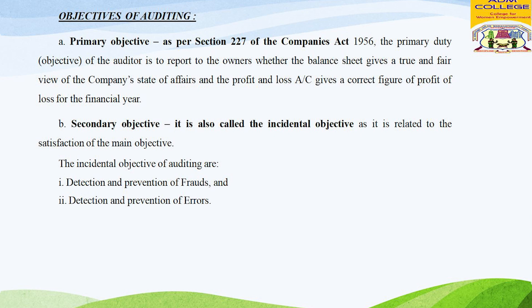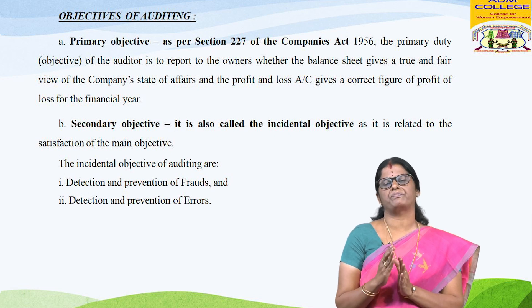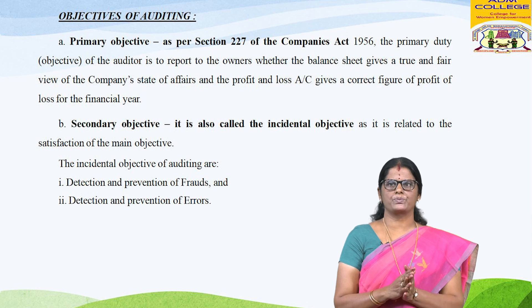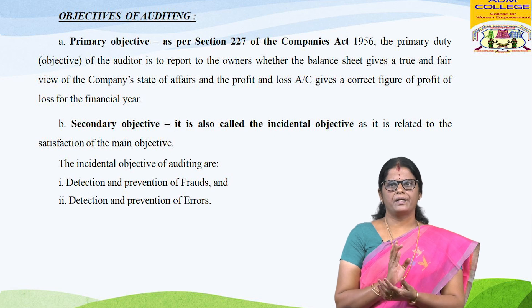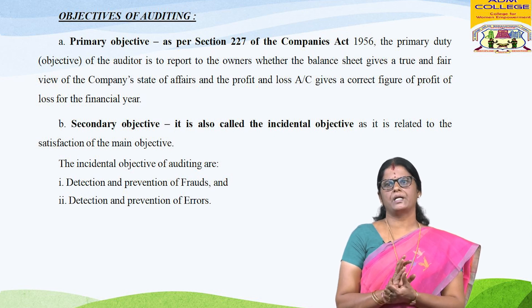The main objective of auditing is to ensure the financial reliability of any organization. Independent opinion and judgment form the objectives of auditing. Auditing also helps to ensure that the books of accounts are kept according to the rules stipulated in the Companies Act, and whether the books of accounts show a true and fair view of the state of affairs of the company. There are two main objectives: the primary objectives and the secondary (incidental) objectives. The primary duty of the auditor, as per Section 227 of the Companies Act 1956, is to report whether the balance sheet gives a true and fair view and the profit and loss account gives a correct figure of profit or loss for the financial year. The secondary objectives, also called incidental objectives, include detection and prevention of fraud and detection and prevention of errors.